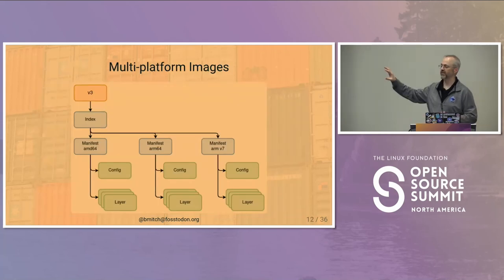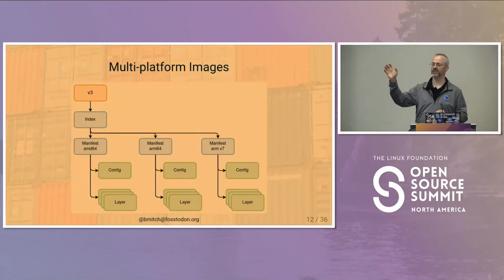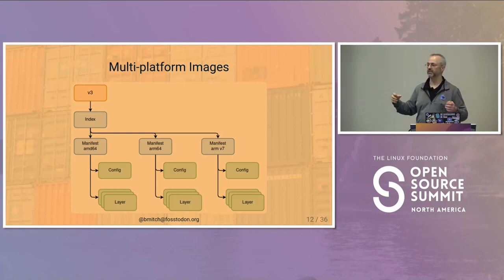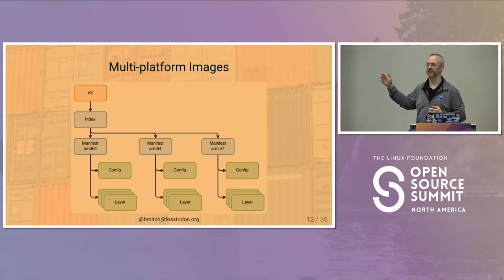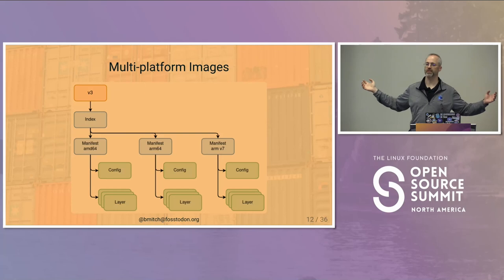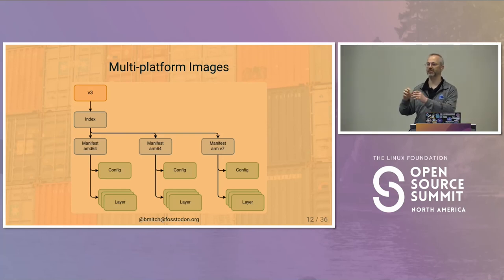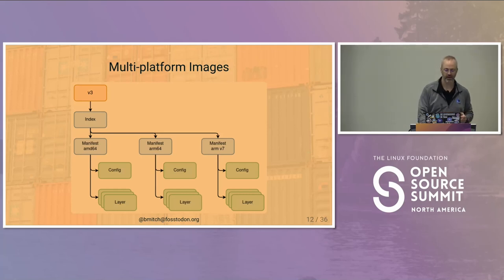The resulting picture looks like this: we've got our tag pointing to the index — our manifest list — which under that has multiple manifests, and each of those has their own config and their own set of layers. We have this nice big structure. Again, this is all a Merkle tree. You get the hash of that index and you know none of the content under there has been changed because those hashes have been pulled up.